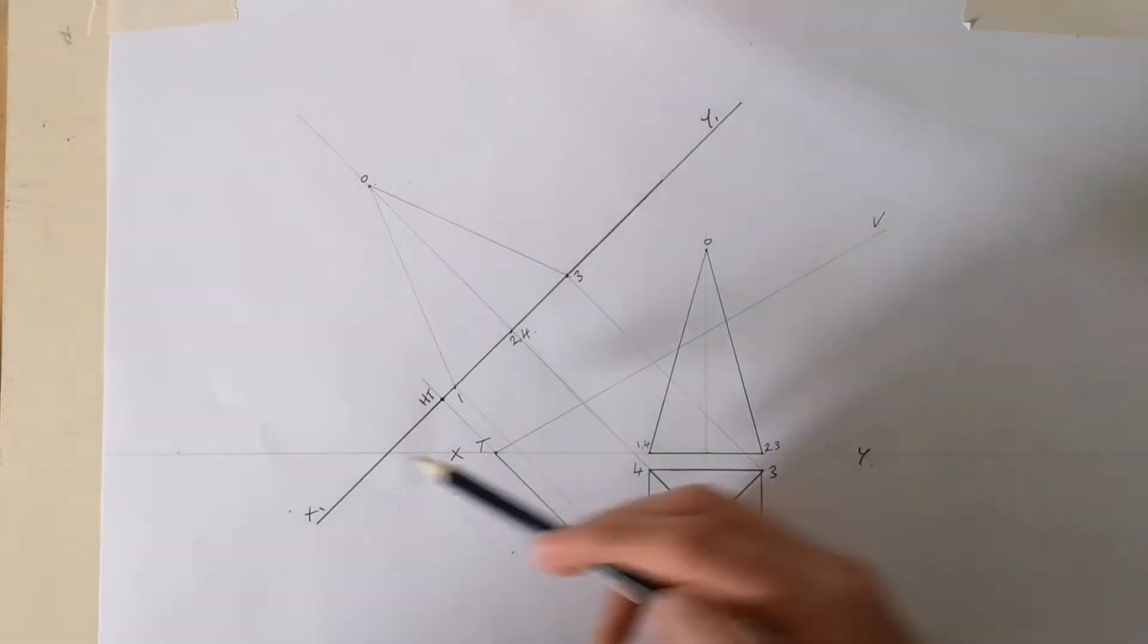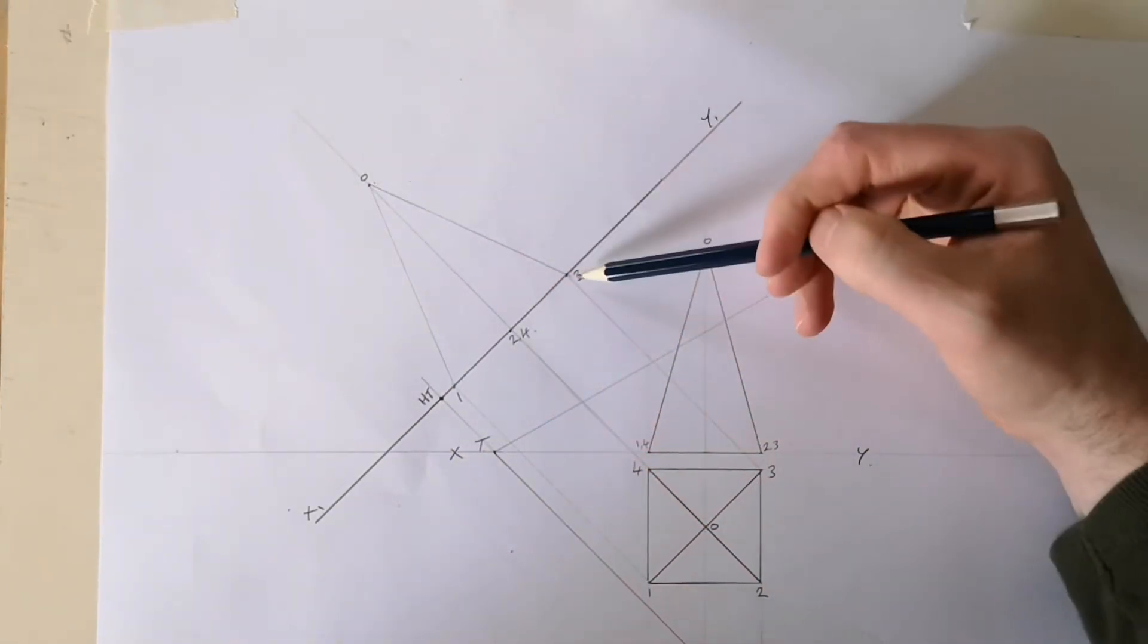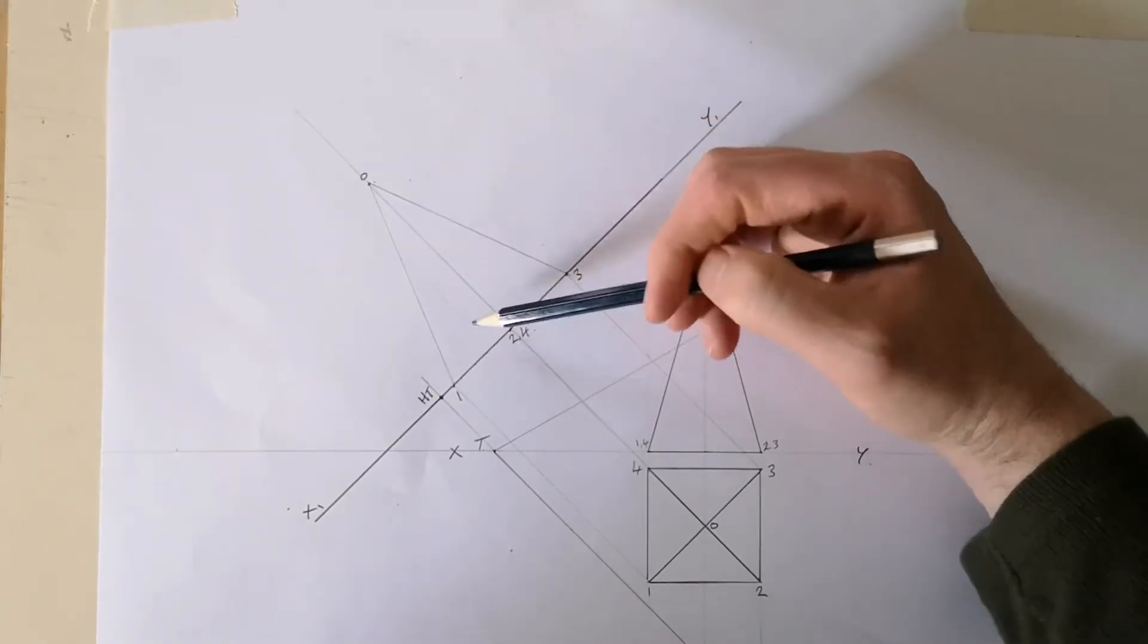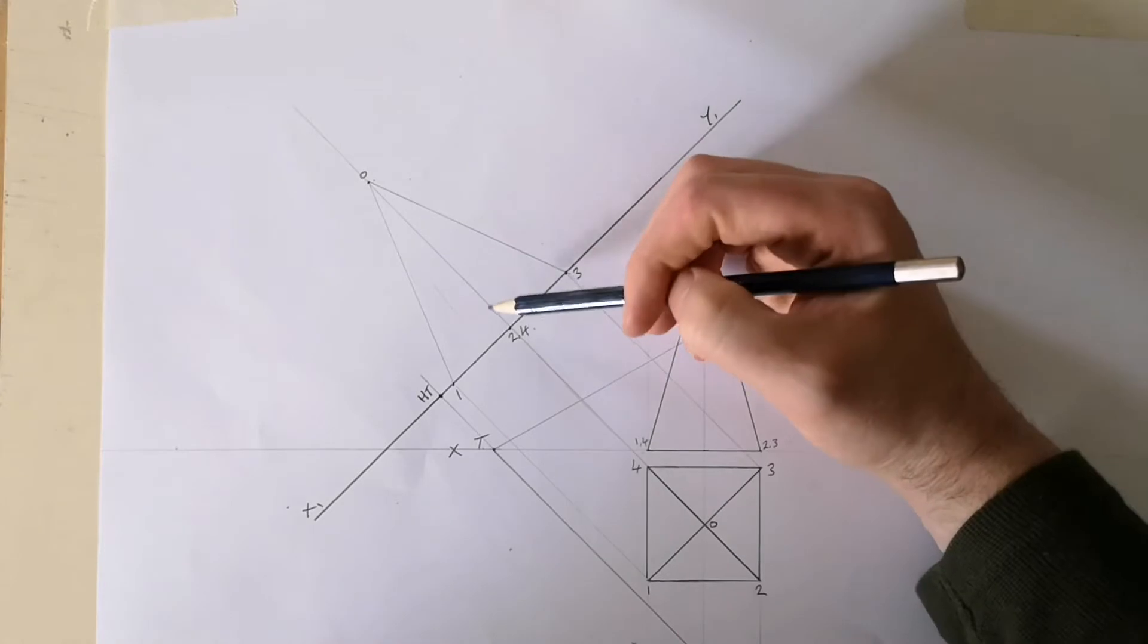Over here on the left-hand side, what we've just drawn, this pyramid, is called an auxiliary view. So you have an elevation, a plan, and now this is an auxiliary view.